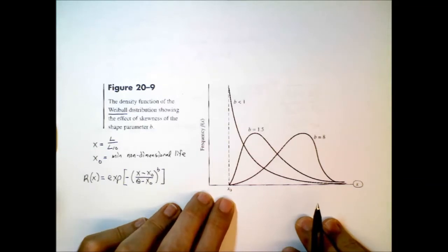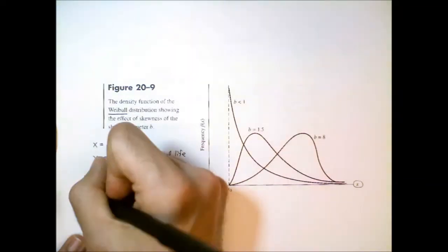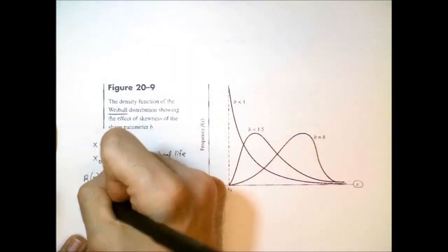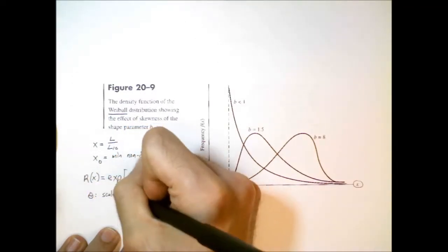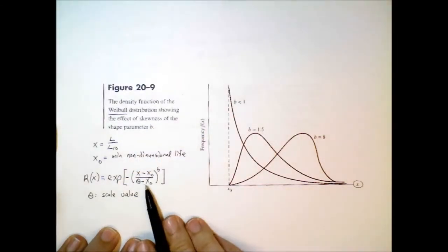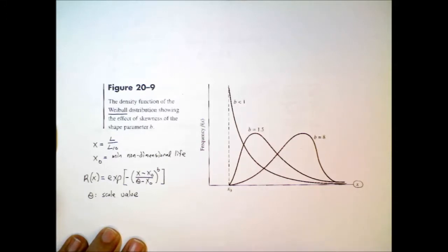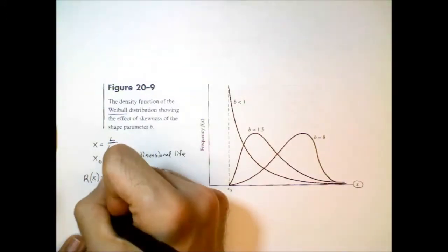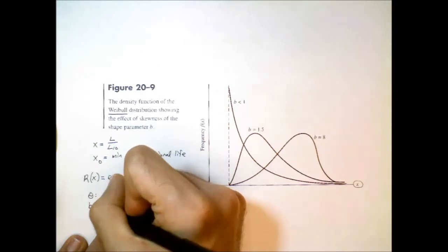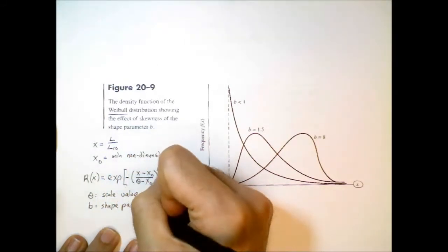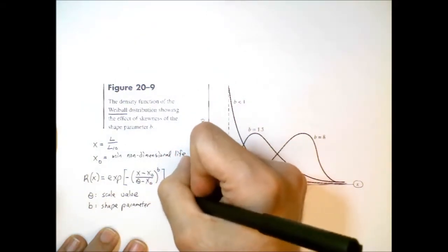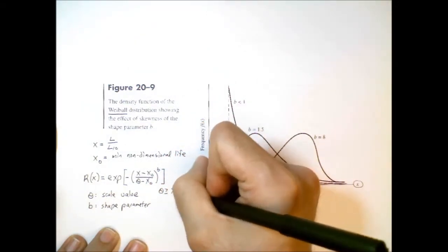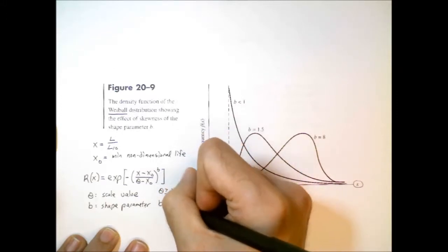So theta, that is what we call either a characteristic or a scale value. It's used in conjunction with this non-dimensional life, so you can think of it as a life value. And then beta, that is the shape parameter. We have a few bounds on these parameters. Theta must be greater than or equal to x naught, and beta must be greater than 0.